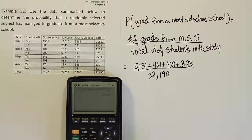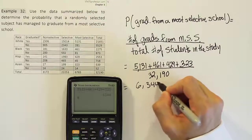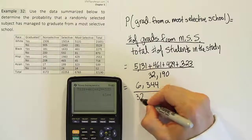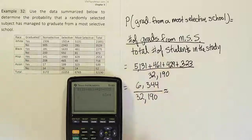Then we will divide that number, which is 6344, by the total 32,190. Let's see what that gives us approximately.